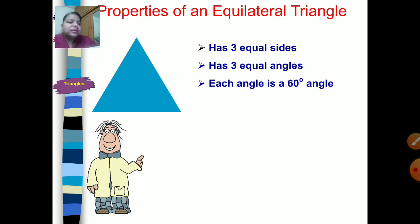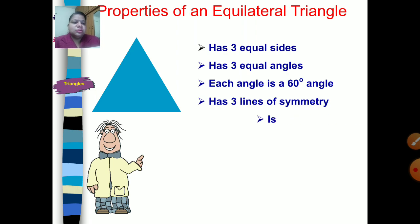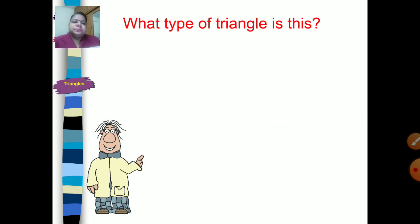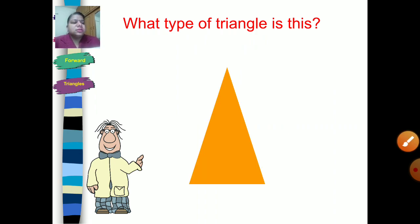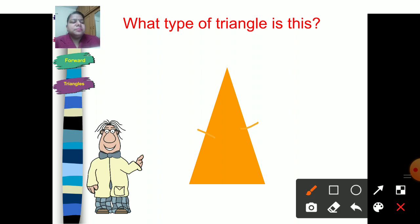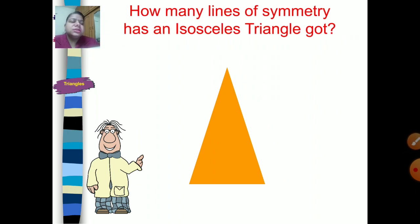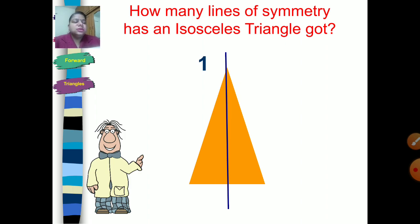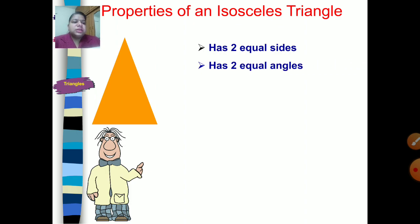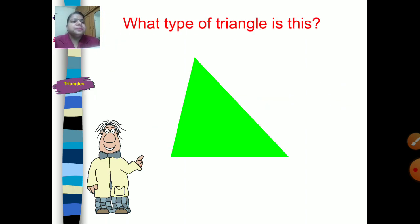An equilateral triangle has three equal angles, three equal sides, each angle is 60 degrees, and it has three lines of symmetry. Now for this triangle — two sides are the same but the base side is different — this is an isosceles triangle. You can draw one line of symmetry from the top vertex to the midpoint of the opposite side. An isosceles triangle has two equal sides, equal base angles, and one line of symmetry.